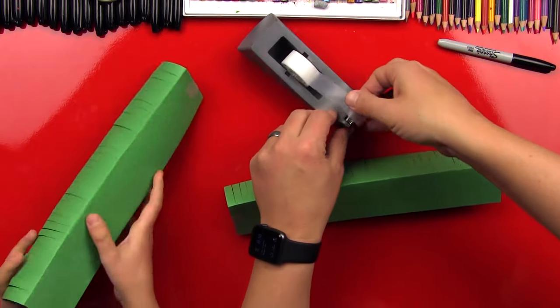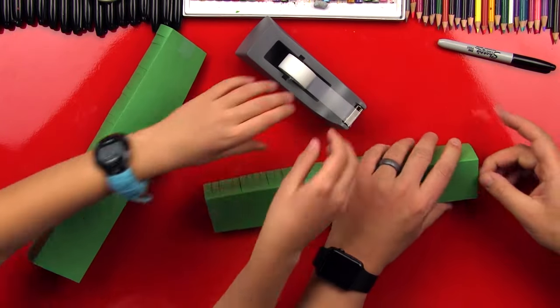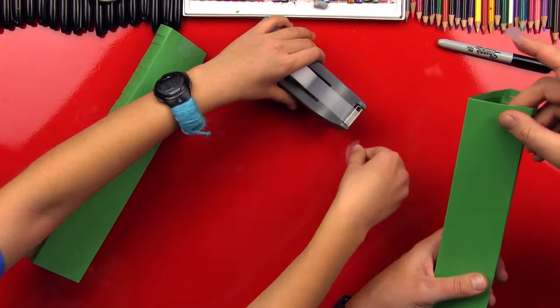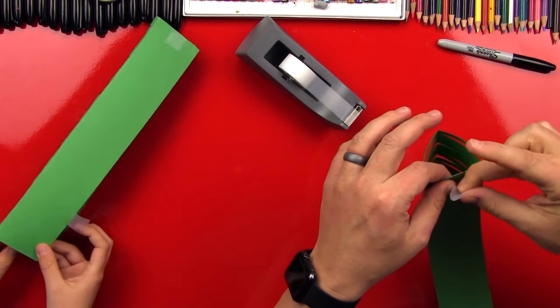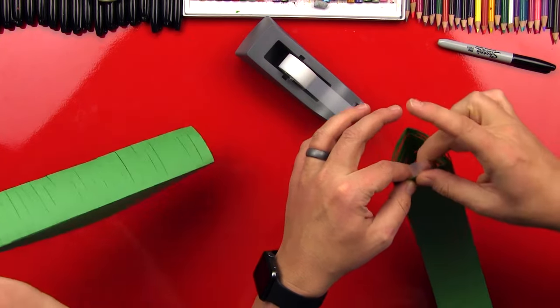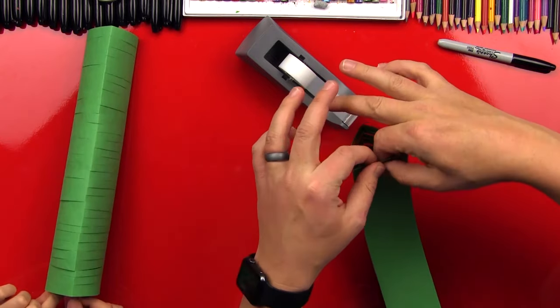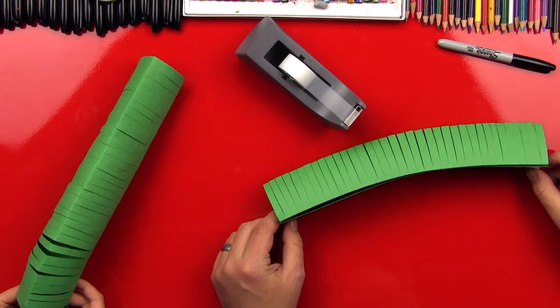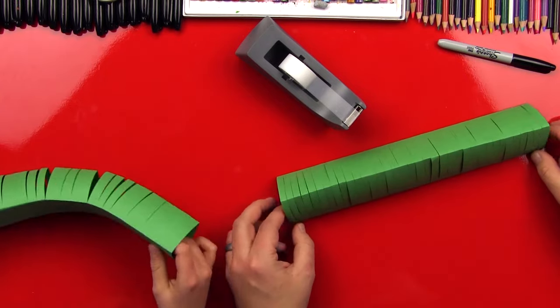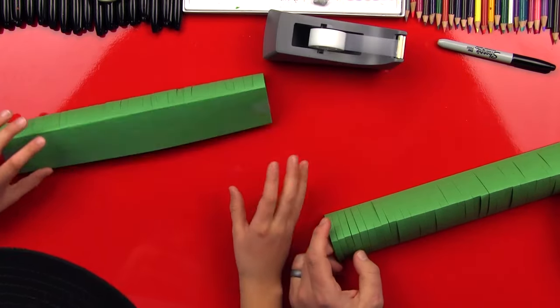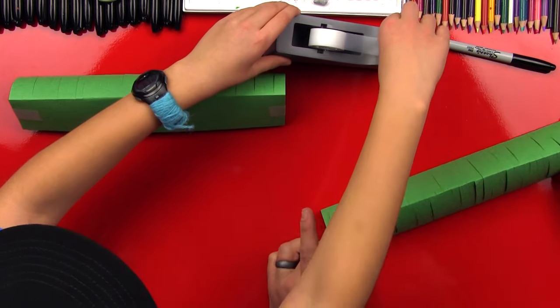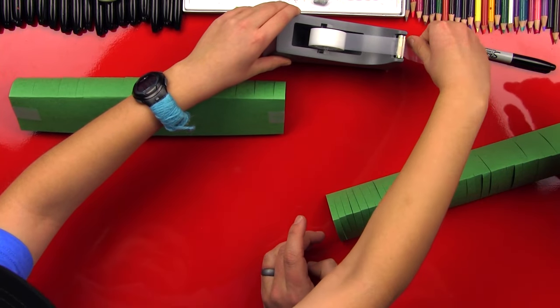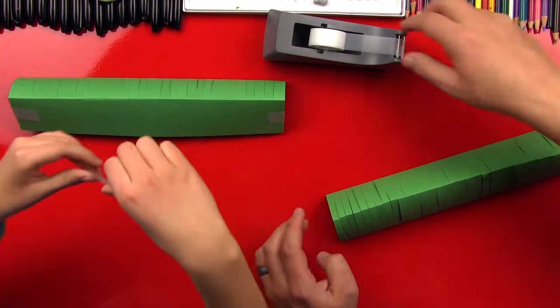And then it makes a triangle like that. Cool. And then you tape the end together. Each end. So I need another piece of tape? Yeah. Put it on there and unfold it inside. That way it stays, huh?